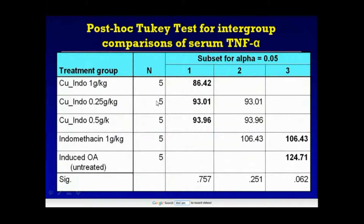This table shows the levels of tumor necrosis factor alpha. We can see that there is a statistically significant difference between the three copper indomethacin treatment groups compared to both the untreated group and the indomethacin-only group.